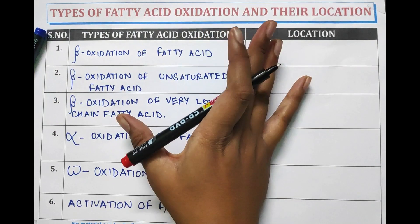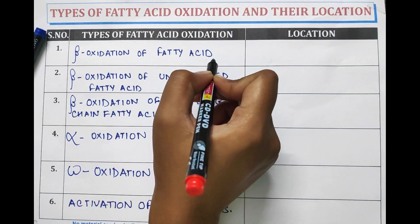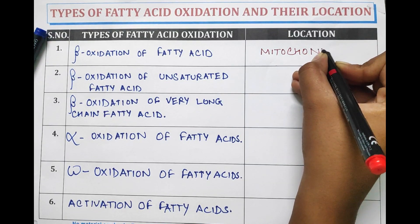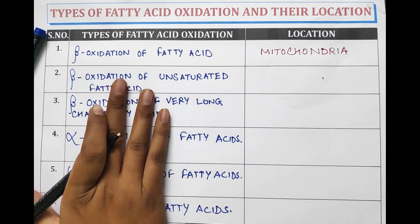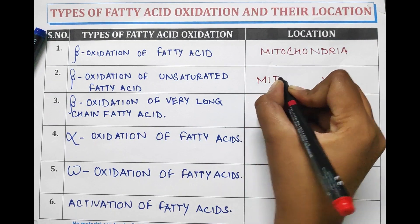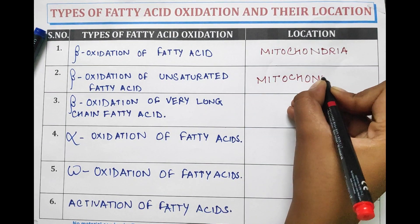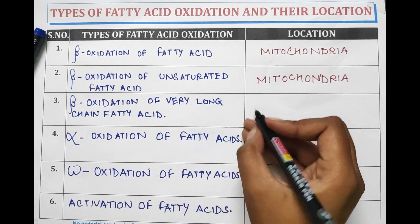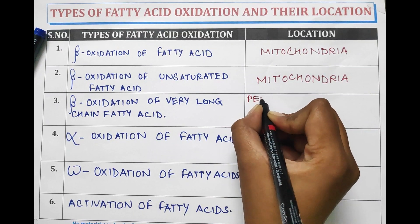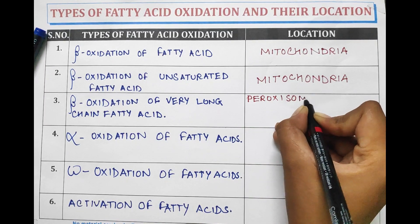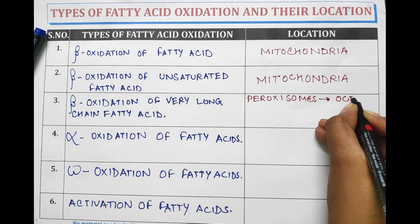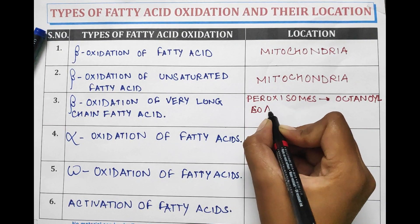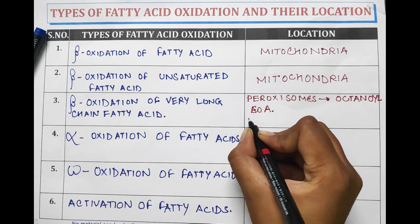Now, the location of types of fatty acid oxidation. Beta oxidation of fatty acids occurs in mitochondria. Beta oxidation of unsaturated fatty acids also occurs in mitochondria. Beta oxidation of very long chain fatty acids occurs in two different locations: peroxisomes up to octanoyl coenzyme A, and then the rest in mitochondria.